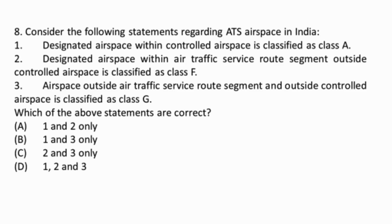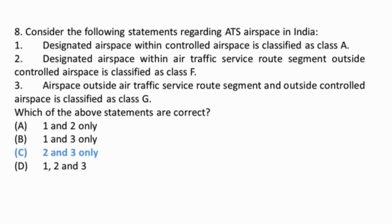Question 8: Consider the following statements regarding ATS airspace in India. Statement 1: designated airspace within controlled airspace is classified as class A — false; Indian airspace is classified as class C, D, E, F, and G. Statement 2: designated airspace within an air traffic service route segment outside controlled airspace is classified as class F — true; this is advisory airspace. Statement 3: airspace outside air traffic service route segments and outside controlled airspace is classified as class G — true; class G airspace is uncontrolled airspace and classified as flight information service.